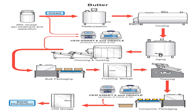Here we can see the flow of operation in the industry diagrammatically. Following the red arrow: first there is milk, then separation of cream, then pasteurization, cooling and aging. After that there is churning and working, then the butter is ready. After that there is bulk packaging, then freezing and storage. For retail packaging it undergoes thawing, then it is melted and made into smaller consumer packaging. Then it goes to chill storage and retail distribution.